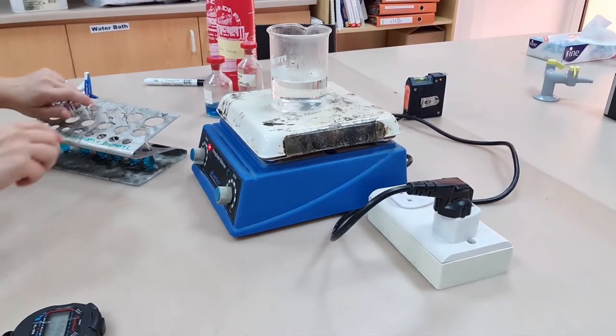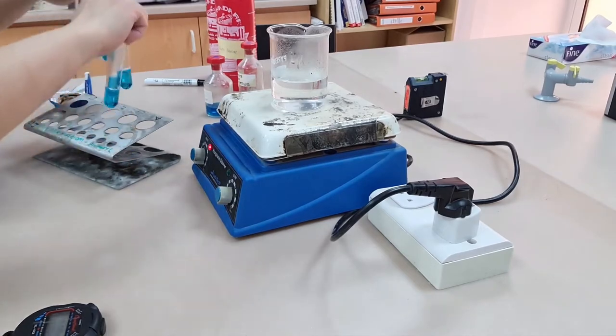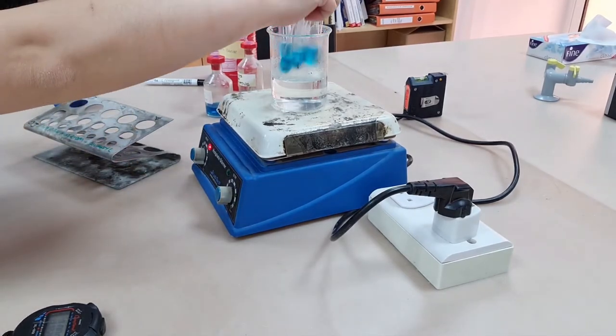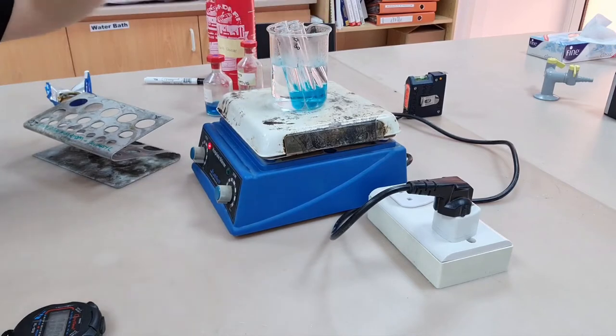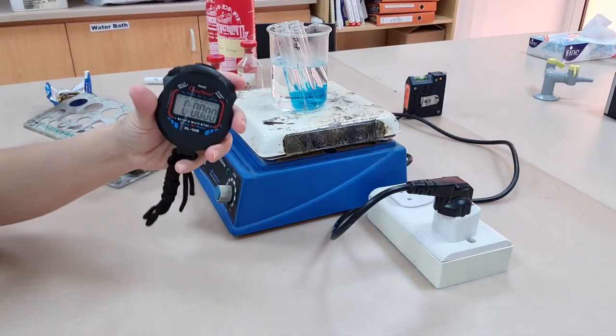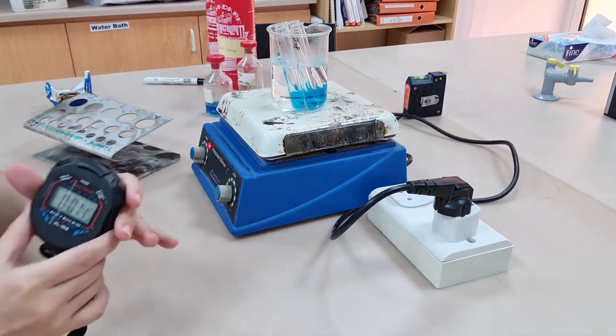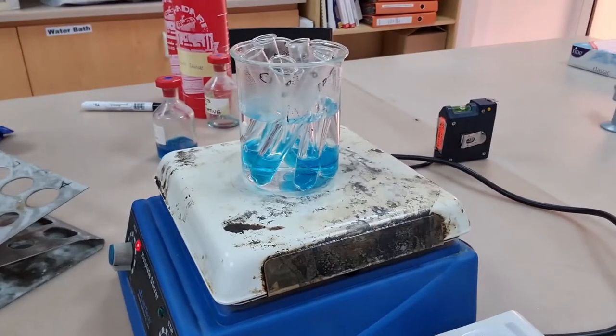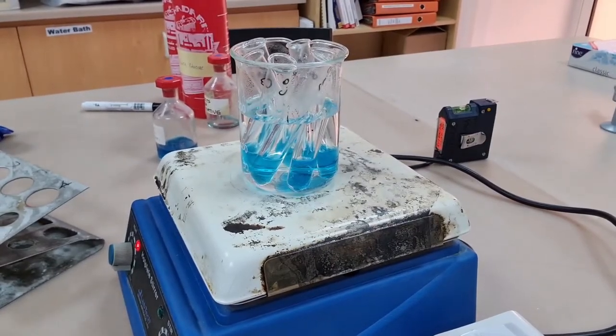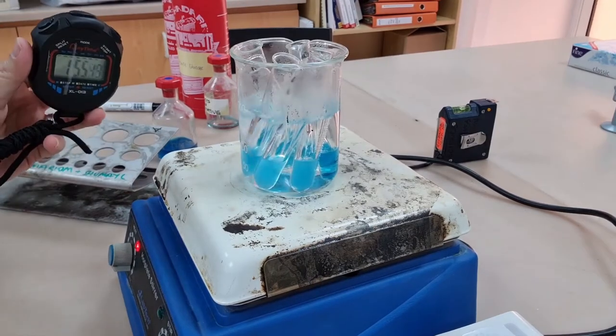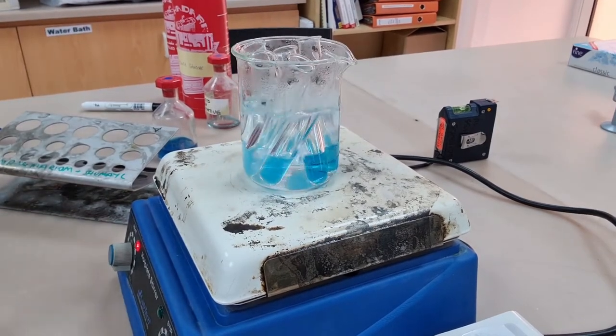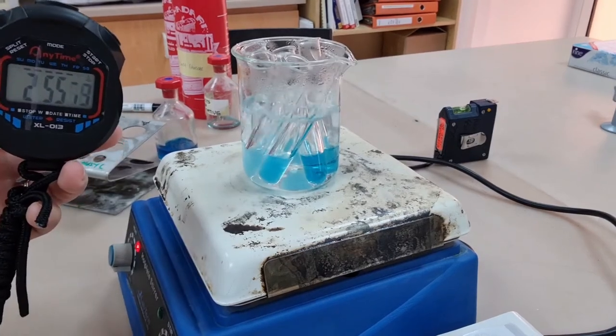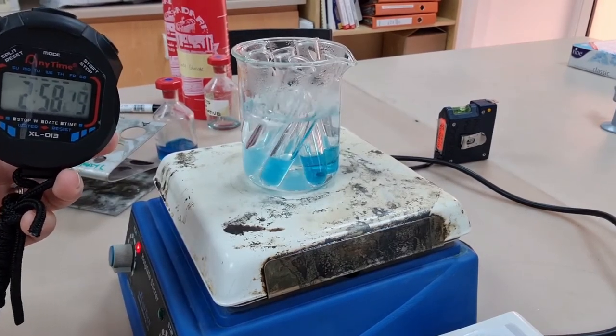Then you're going to place all tubes at exactly the same time into the boiling water bath and you're going to boil them, not heat them at 90 degrees, for three minutes. You can see that as the time progresses some of them are becoming increasingly opaque. At three minutes you can remove them all from the heat.